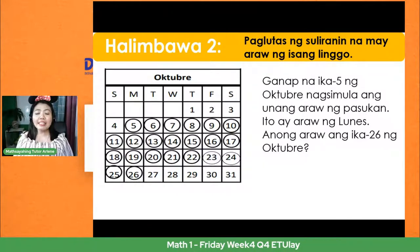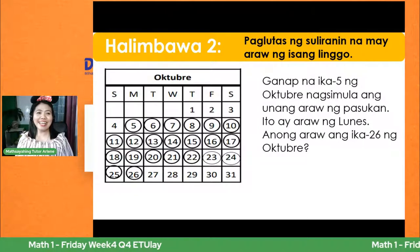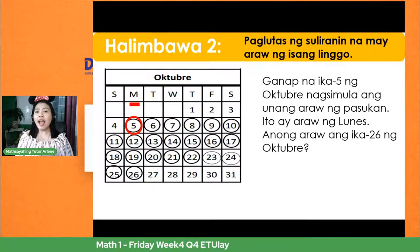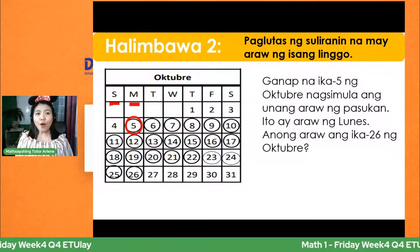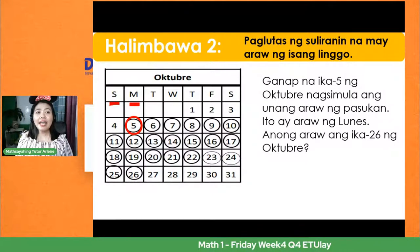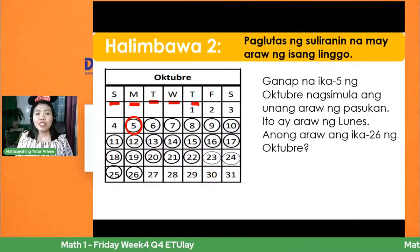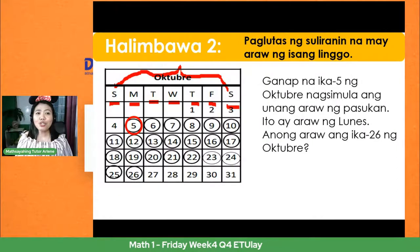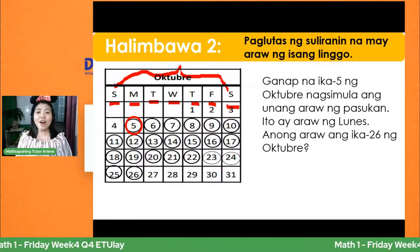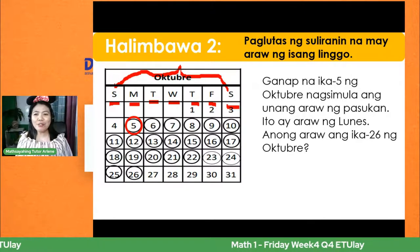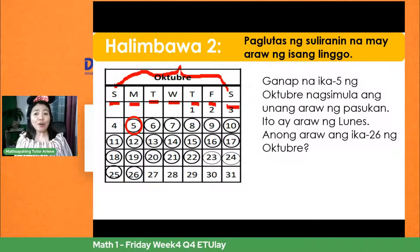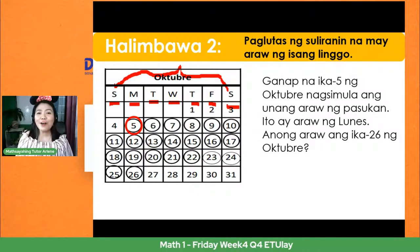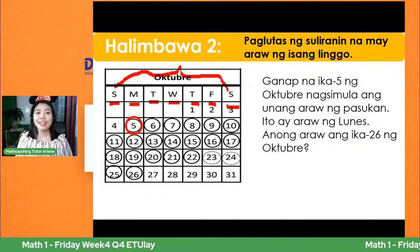Bilugan nga natin yung first day of school. Ang araw sa isang linggo ay pito: Linggo o Sunday, Monday, Tuesday, Wednesday, Thursday, Friday, and Saturday. Sa Tagalog: Linggo, Lunes, Martes, Merkules, Huwebes, Biyernes, Sabado. Nagsimula tayo ng Lunes ang Oktubre 5. Anong araw daw ang ika-26 ng Oktubre? Ito ay nakatapat din sa araw ng Lunes.